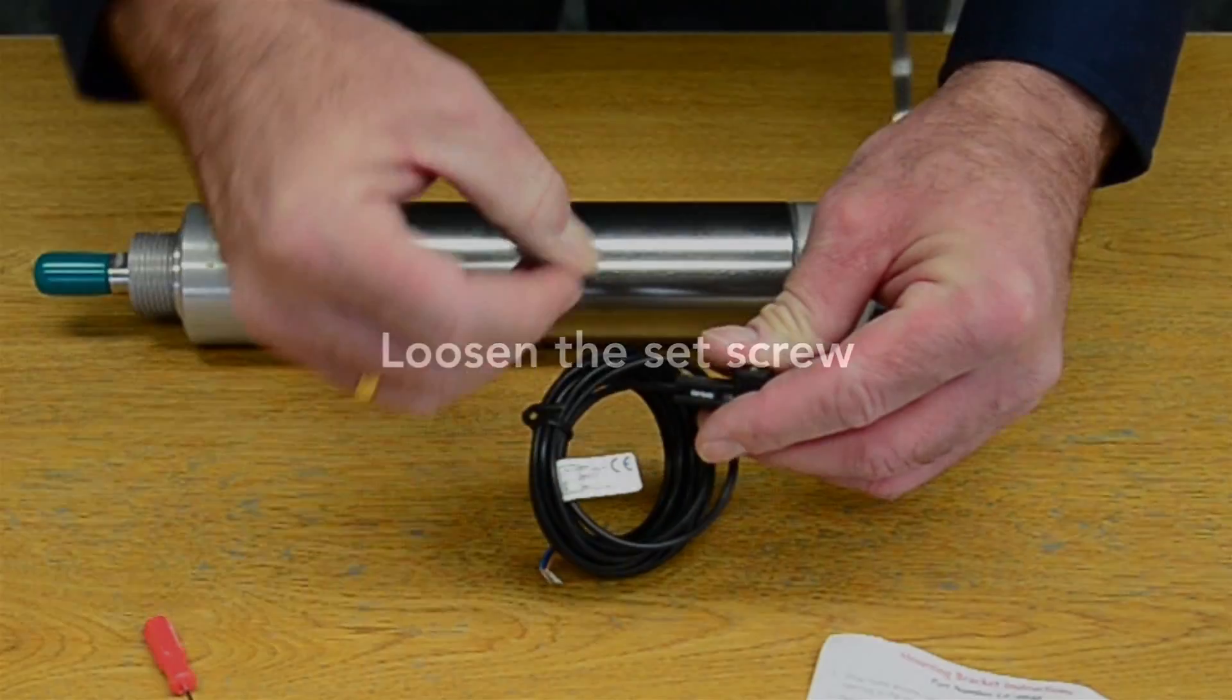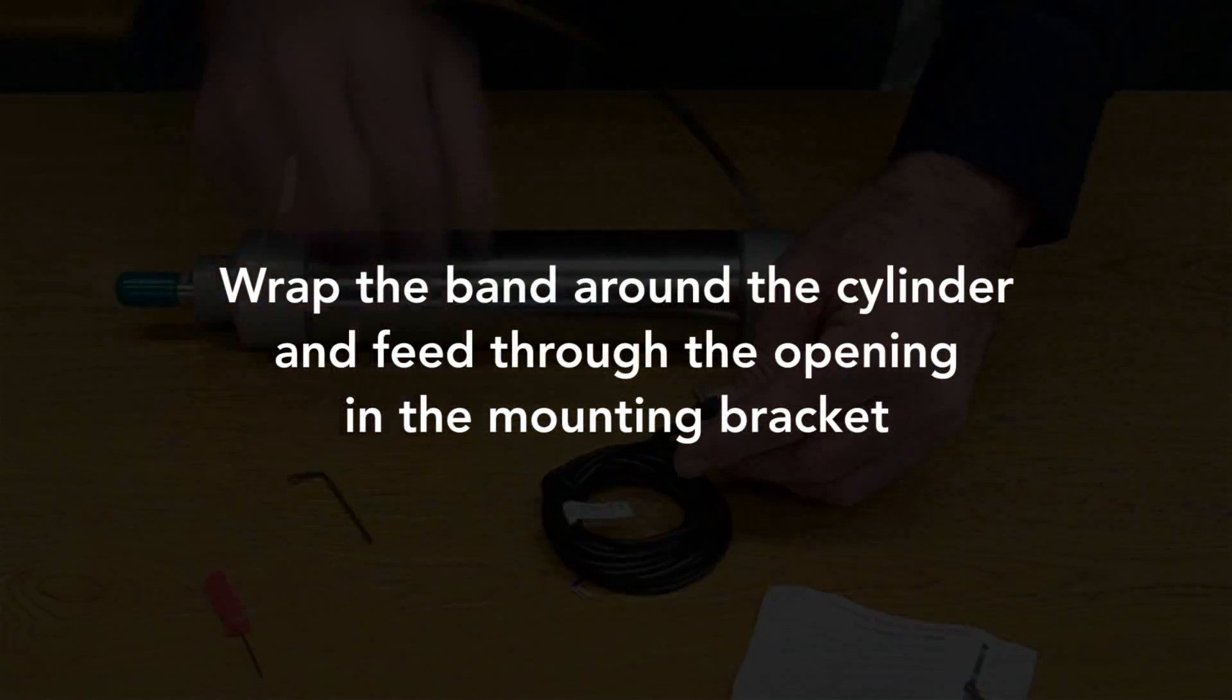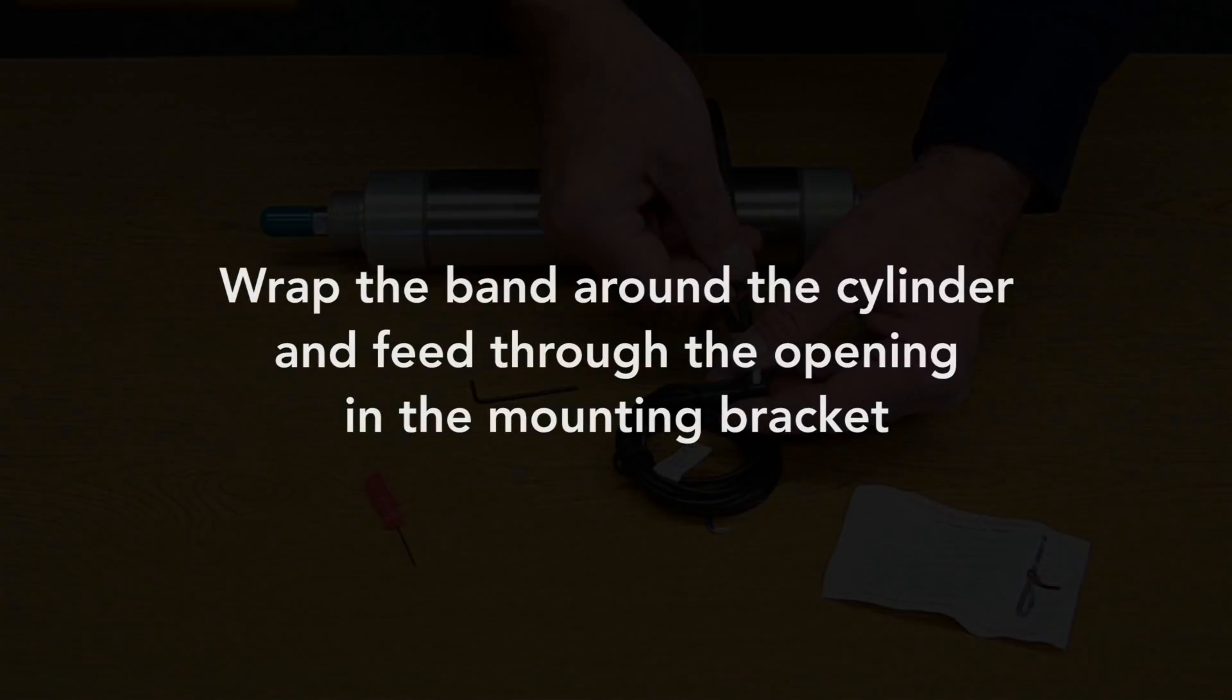Then loosen the set screw with the provided Allen wrench. Wrap the band around the cylinder and feed it through the opening in the mounting bracket.